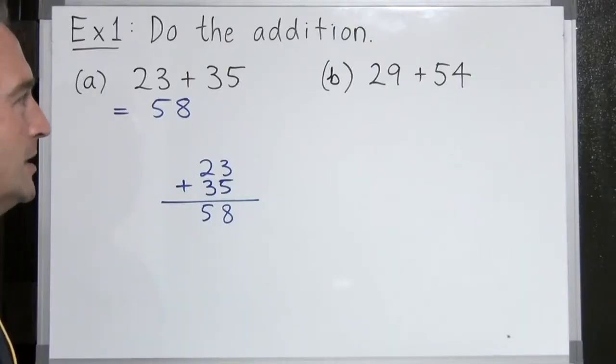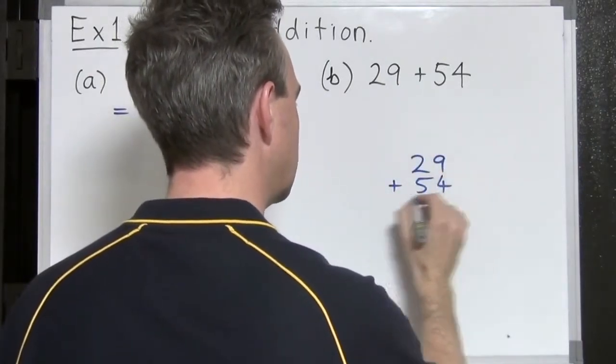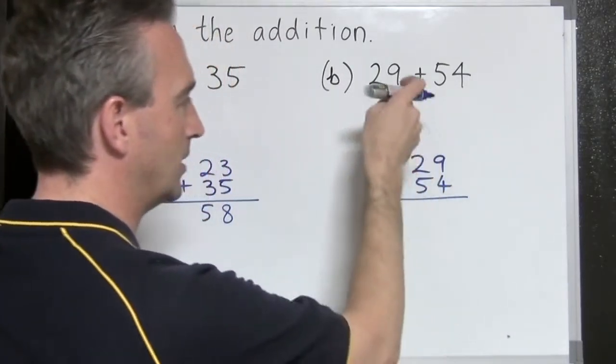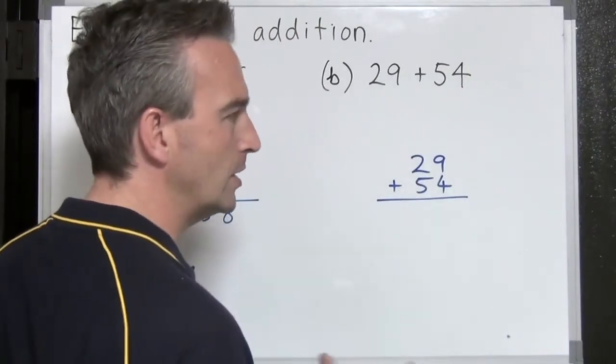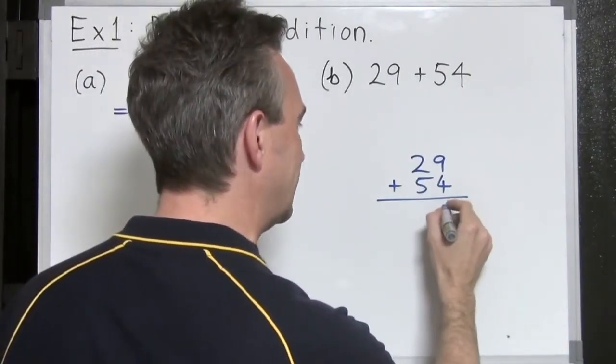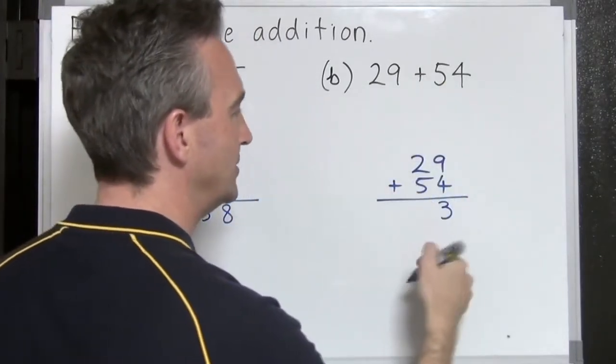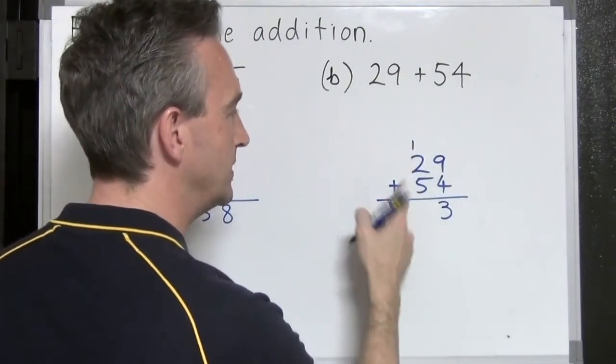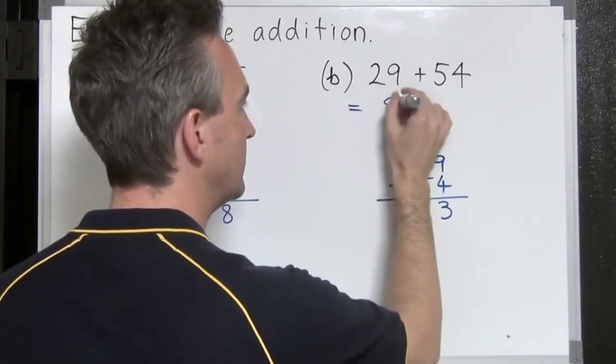Another one, 29 plus 54. Set it up again. Okay, align the units. Align the ones of the units and align the tens. This time, 9 plus 4. 9 plus 4 is bigger than 10. It's 13. So what we do is the 3 in 13 belongs in the ones column. And the 10 in 13 belongs in the tens. And then we add these. 1 plus 2 is 3. 3 plus 5 is 8. Giving us an answer of 83.